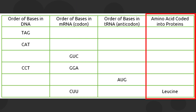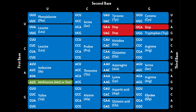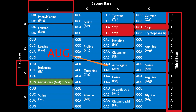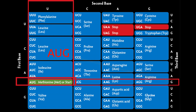Now, to identify the amino acid produced in translation, we are going to use the genetic code table. For example, the mRNA codon is AUG. You look for the first letter of the mRNA codon on the left side of the genetic code table — that is A — the second letter on the second letter column — that is U — and the third letter on the right side column, which is G. So, AUG codes for the amino acid methionine.